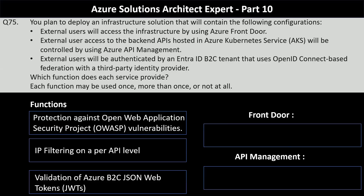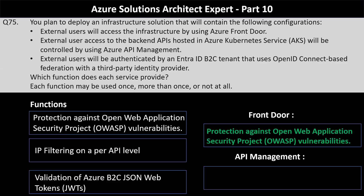Azure Front Door provides web application firewall capabilities that protect against OWASP vulnerabilities such as SQL injection and cross-site scripting, ensuring that requests are filtered for malicious content before reaching backend services. Azure API Management can validate JWTs issued by Entra ID B2C, enforcing authentication policies that check token validity and ensure it is issued by the trusted Entra ID B2C tenant, thereby enabling secure access to APIs.